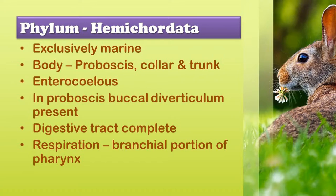Mostly they are tubicolous. Tubicolous means they have tube-like structures, and they are commonly called acorn worm or tongue worm. They are exclusively marine. The body is classified into proboscis, collar, and trunk.